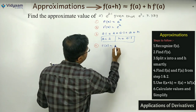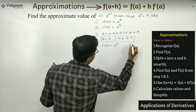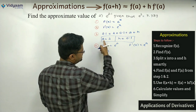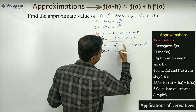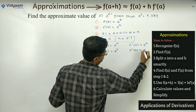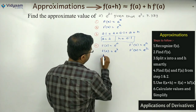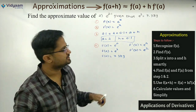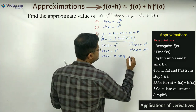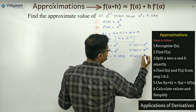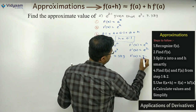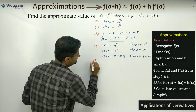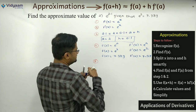Now f(a) = e² with a = 2. The answer is directly 7.389, as it is given. Similarly f'(a) = e² = 7.389. So both values are ready. Now apply master formula in step 5: f(a + h) ≈ f(a) + h·f'(a).